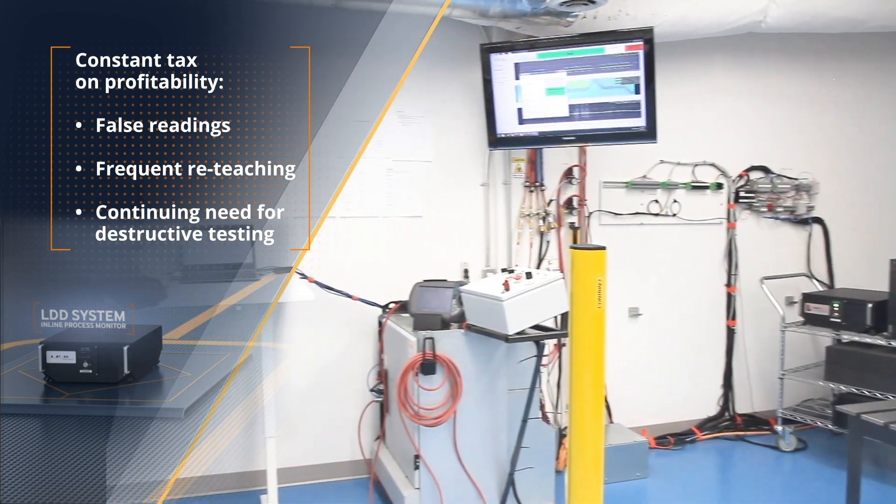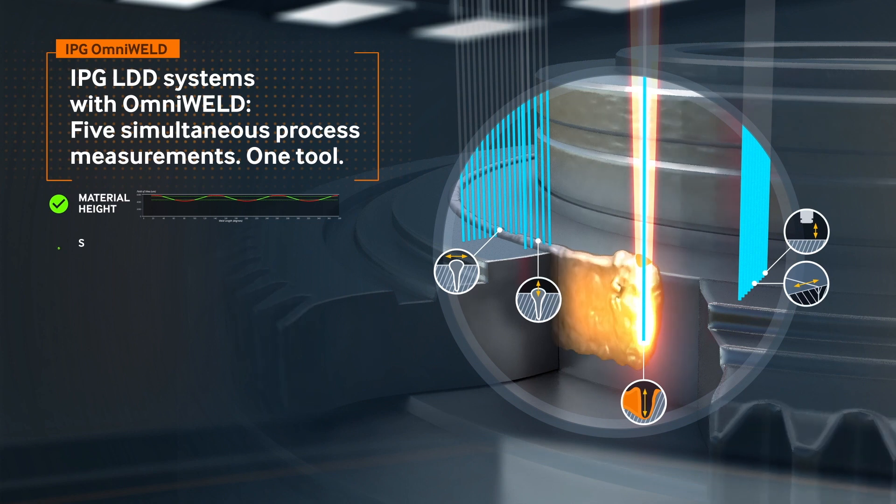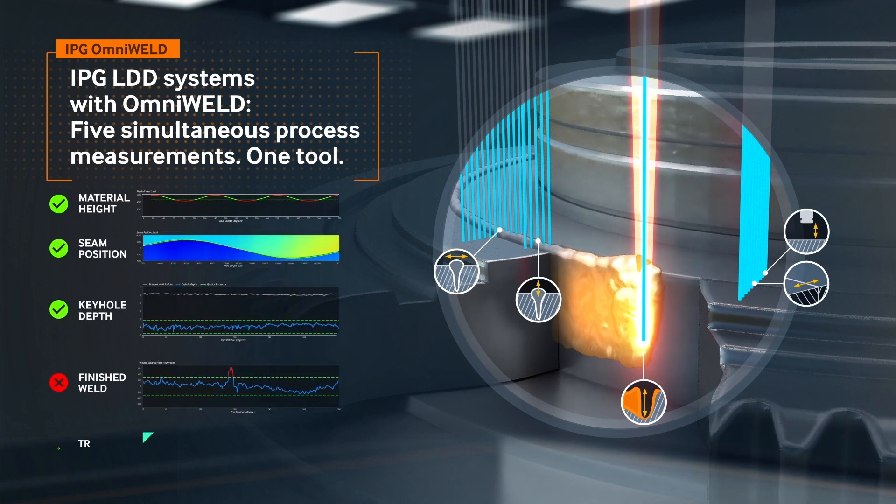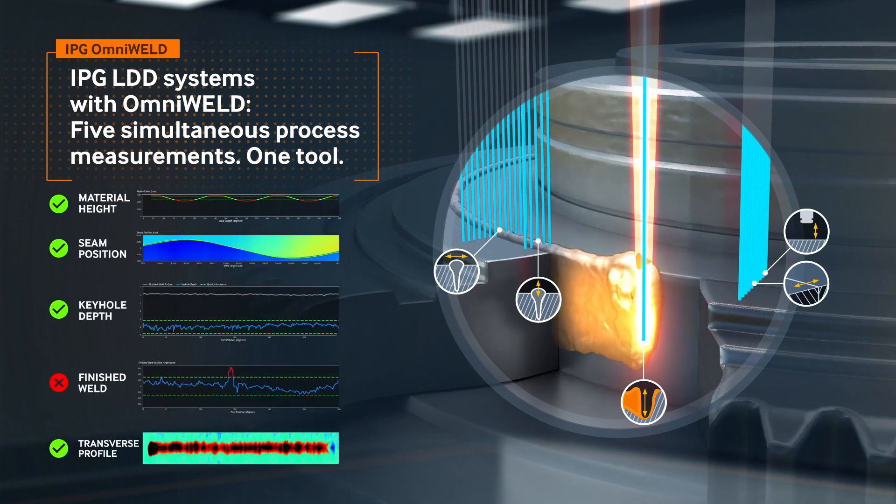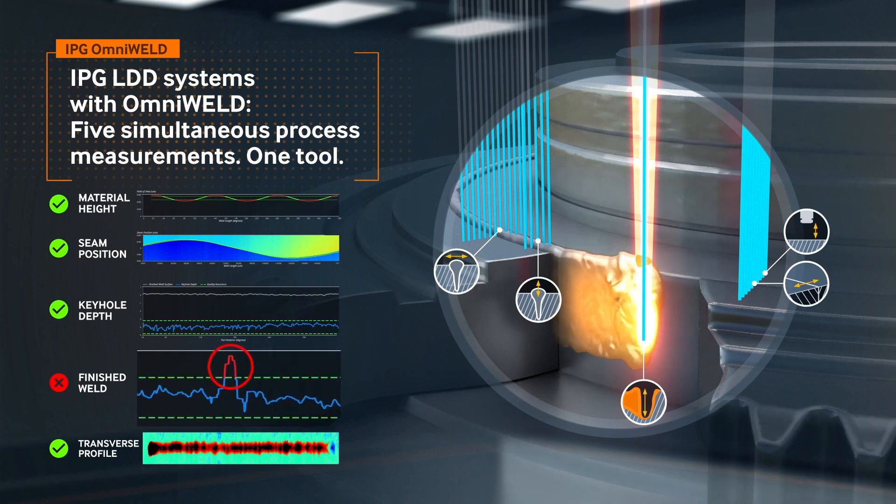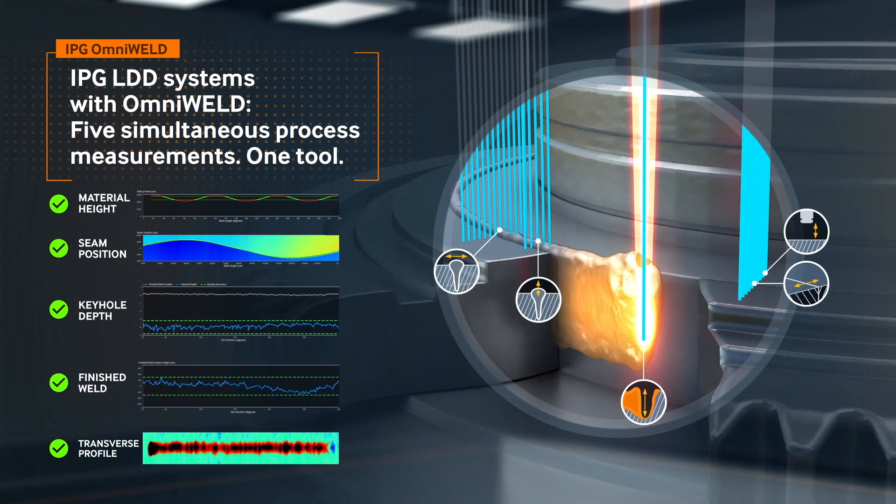IPG's LDD inline process monitor is an all-in-one tool that can deliver more than five simultaneous measurements, including material height inspections, the positions of seams, the depth of the keyhole, the finished weld surface, and the transverse profile of the weld bead.